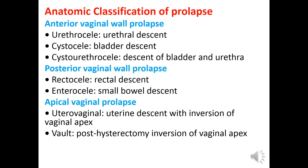Apical vaginal prolapse includes uterovaginal prolapse — uterine descent with inversion of the vaginal apex — and vault prolapse, which is post-hysterectomy inversion of the vaginal apex.